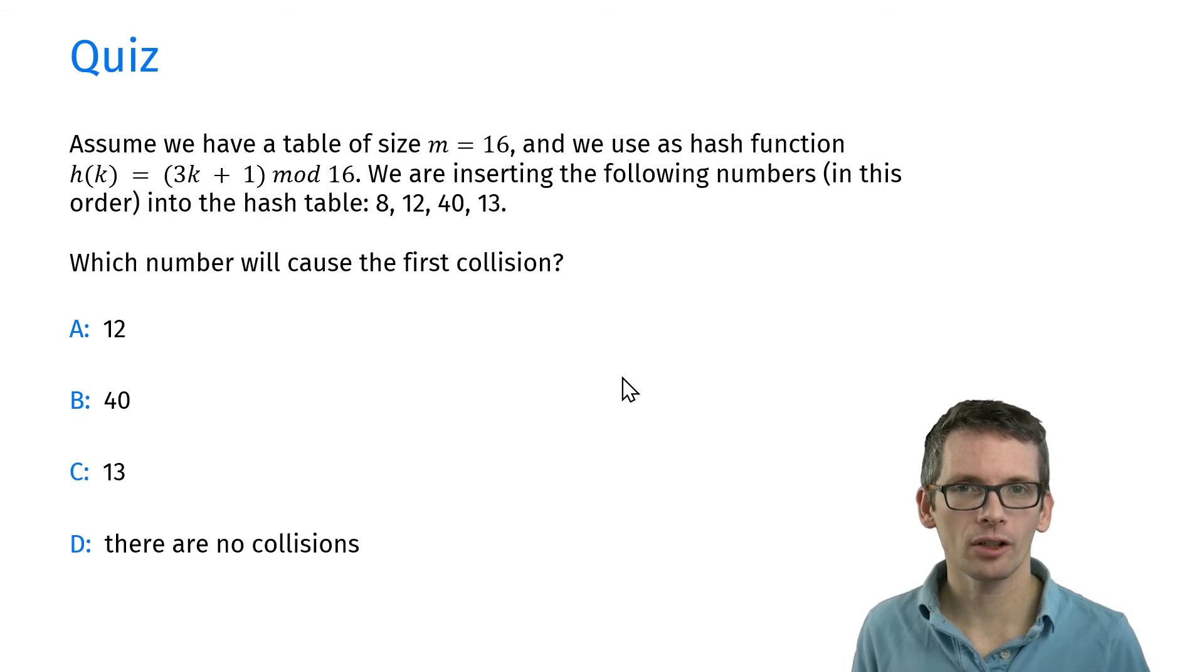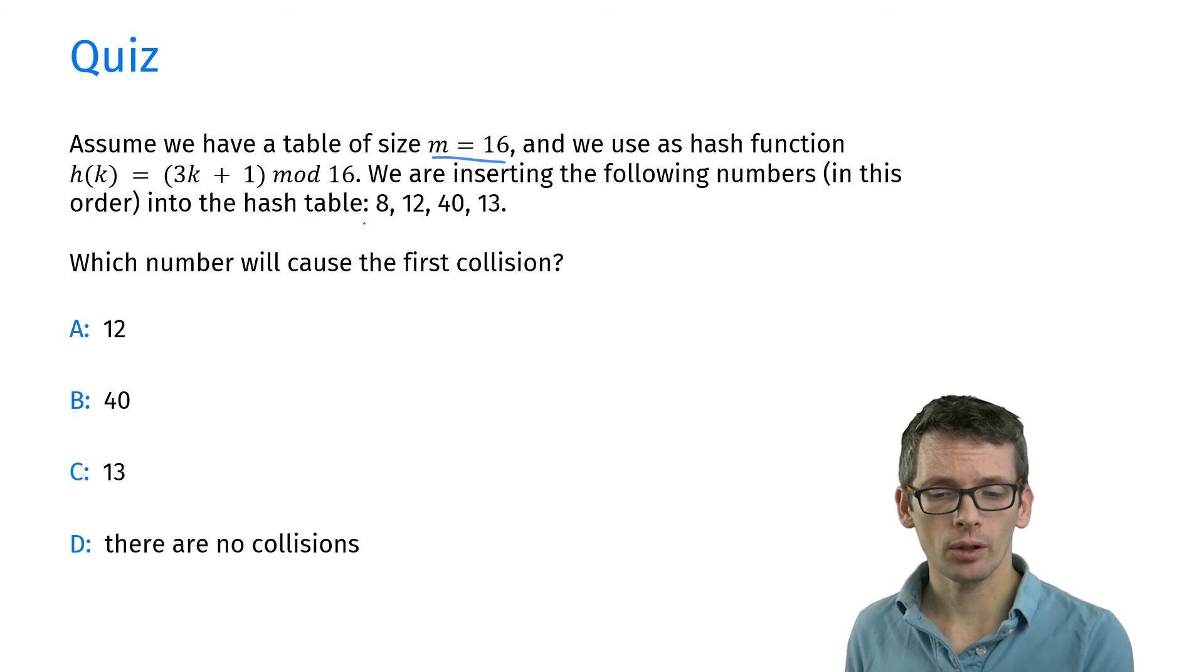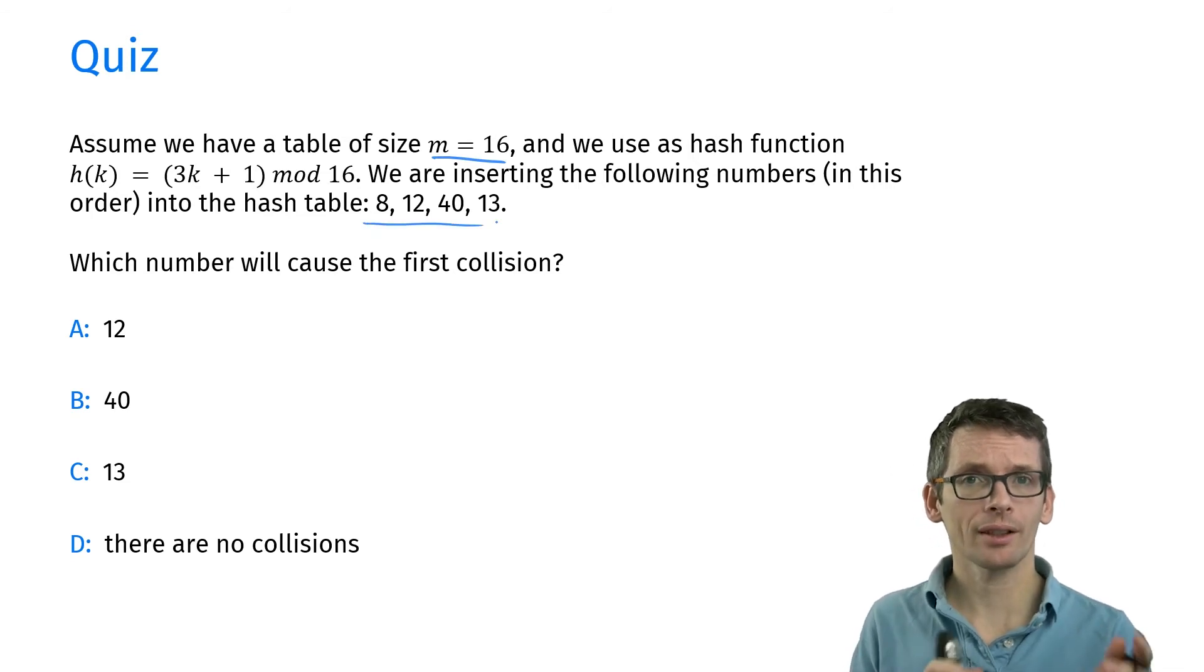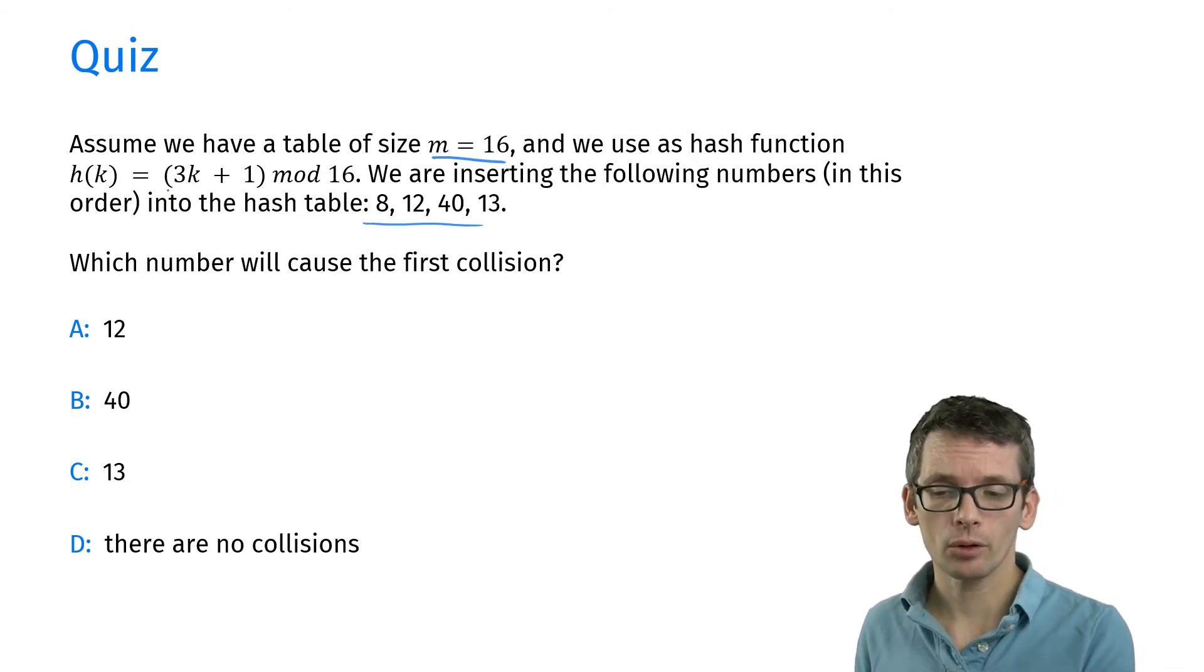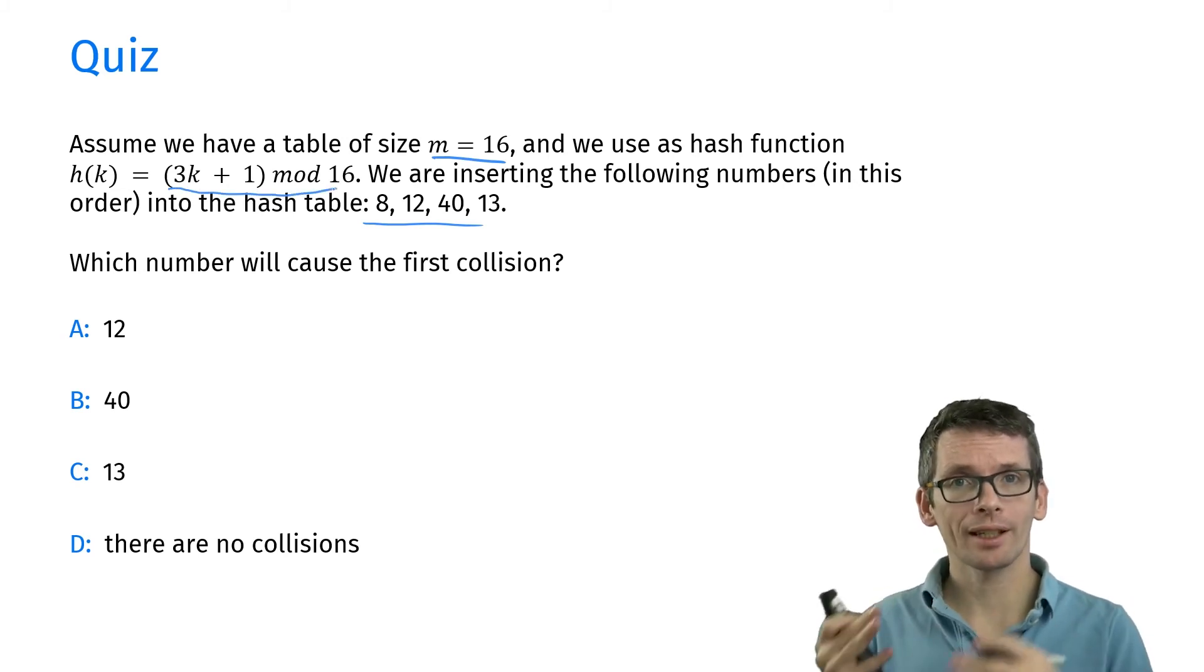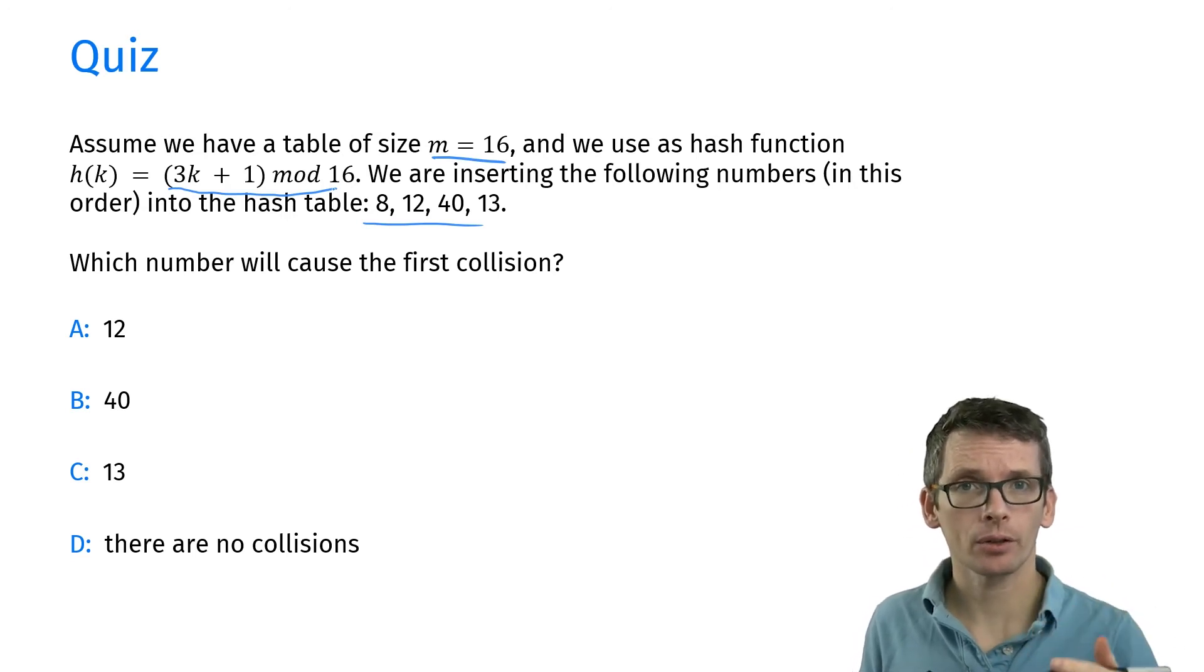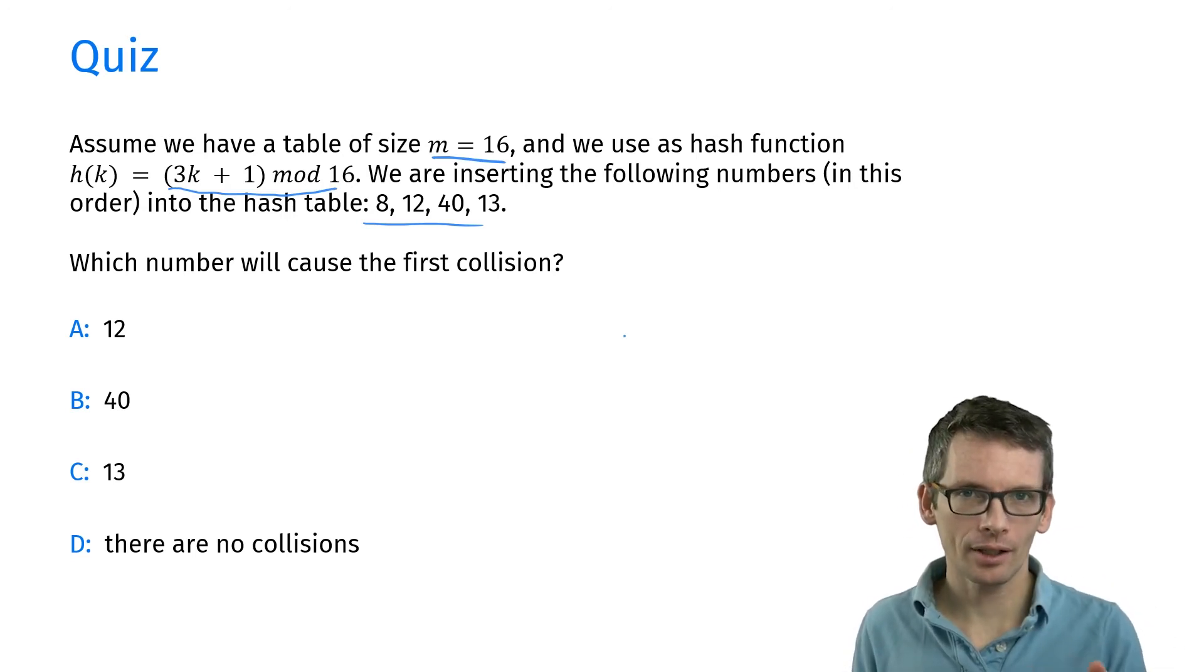Before we take a closer look at hash functions, let's have a quiz. This is actually more an exercise than a quiz. The setting here is we have a hash table of size 16, so indices from 0 to 15. We want to insert these elements—8, 12, and so on—in this order. The hash function we're going to use is 3k plus 1 modulo 16. The question is, when do we get our first collision?